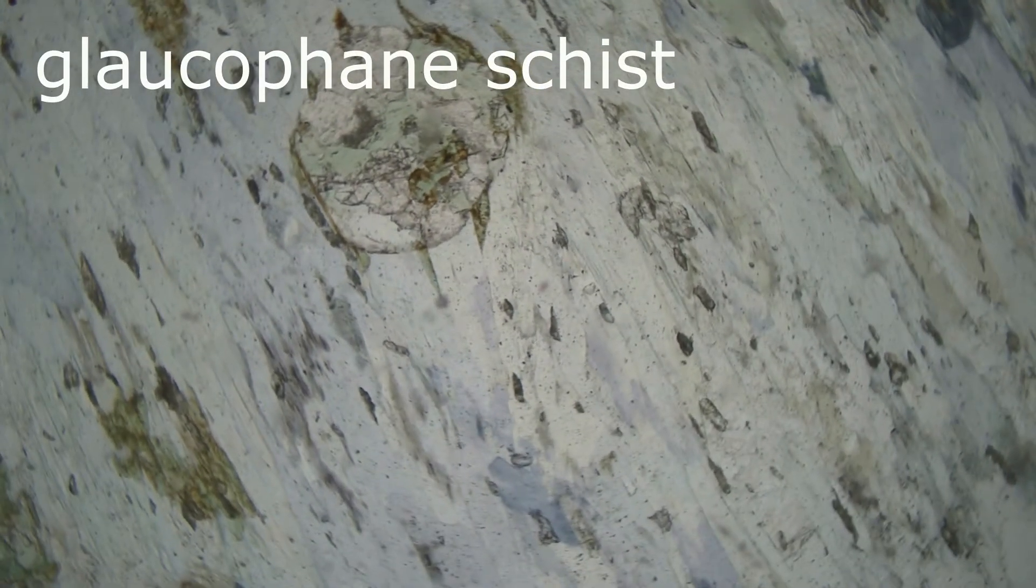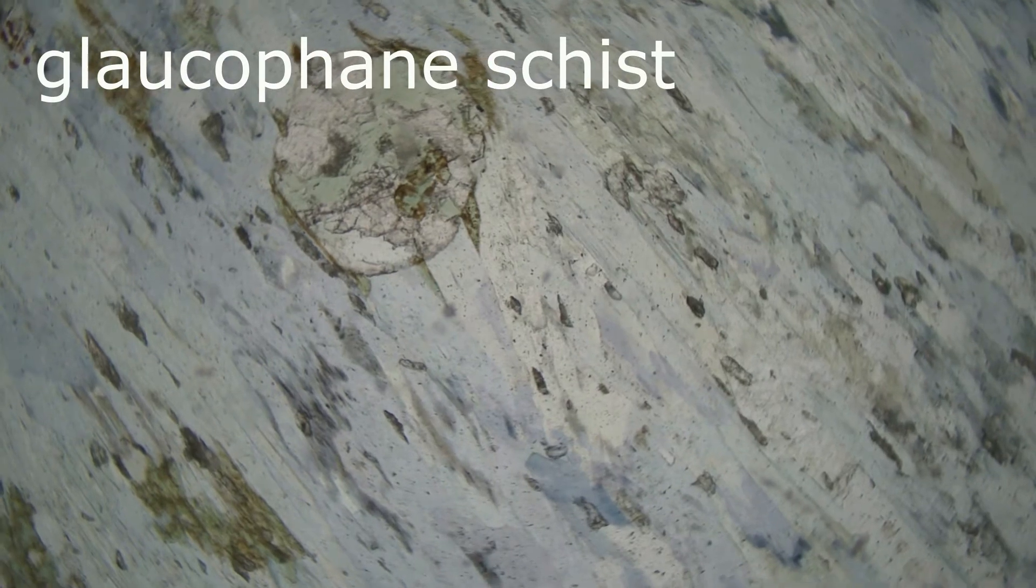This is a thin section of a glaucophane schist. Glaucophane is a blue amphibole, and in thin section, it shows pleochroism involving various shades of blue, violet, and purple. The color change with stage rotation in this sample is quite subtle compared to the biotite we just looked at.